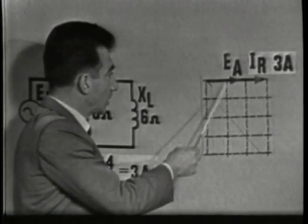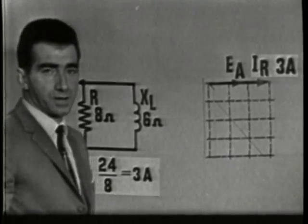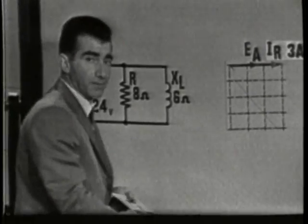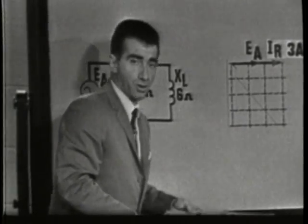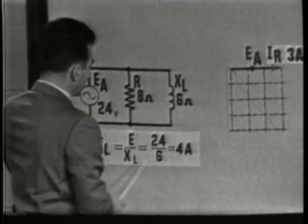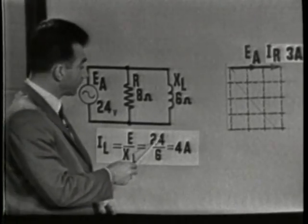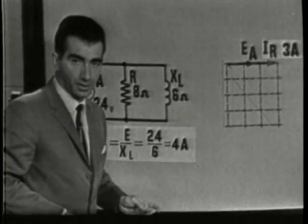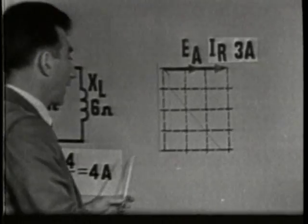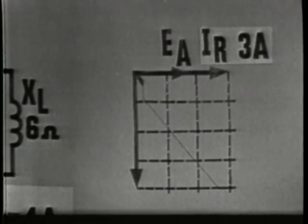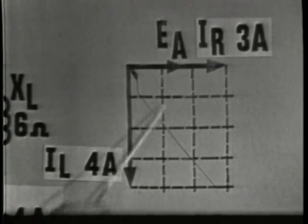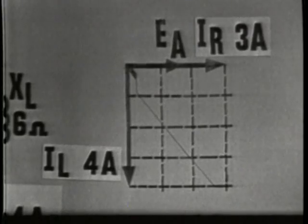We've allotted 3 units on the graph to represent IR of 3 amperes. Now, to find IL, or the inductive current, we use the same method — apply Ohm's Law. IL is equal to E over XL, or 24 over 6 ohms, which gives IL equals 4 amperes. When we plot IL on the vector graph, we must show the 90-degree phase difference. Remember, IL lags EA by 90 degrees, and it is a value of 4 amperes, so we'll use 4 units on our graph.